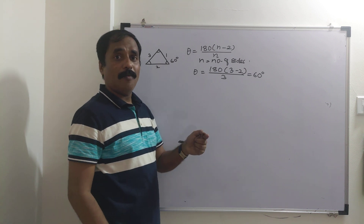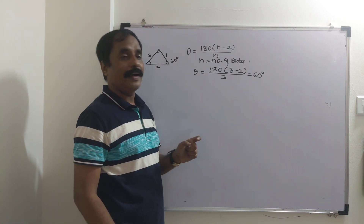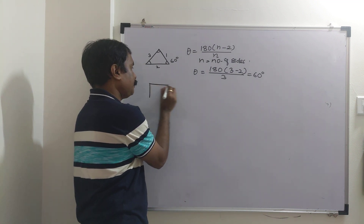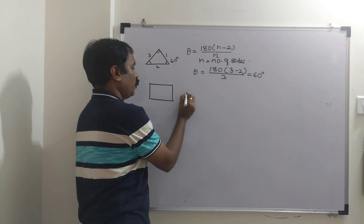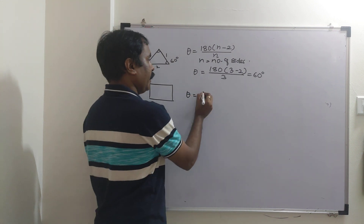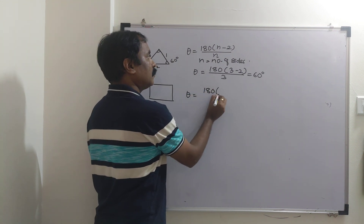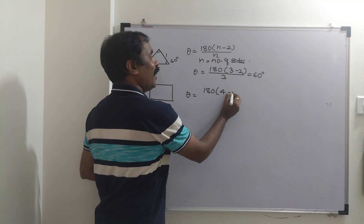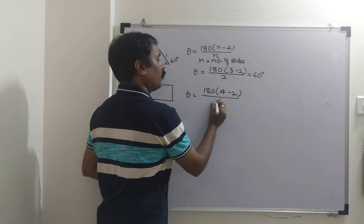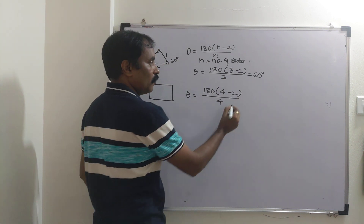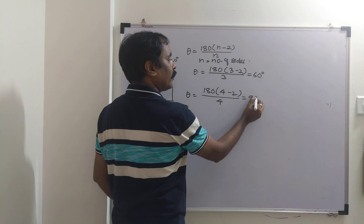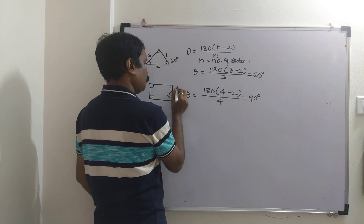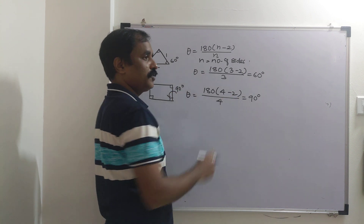The regular tetrahedral bond angle is 109.5 degrees, and cyclopropane's bond angle is 60 degrees — a much larger deviation. For cyclobutane, n equals 4, so theta equals 180 times (4 minus 2) divided by 4, giving a bond angle of 90 degrees. There is still a significant deviation from 109.5 degrees.